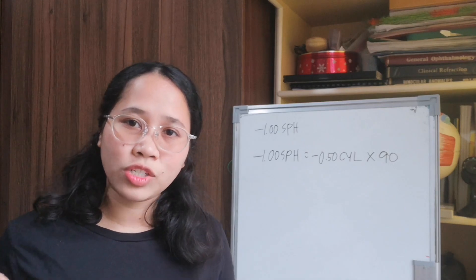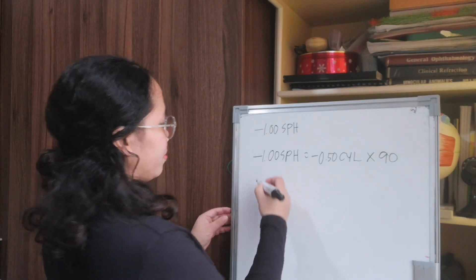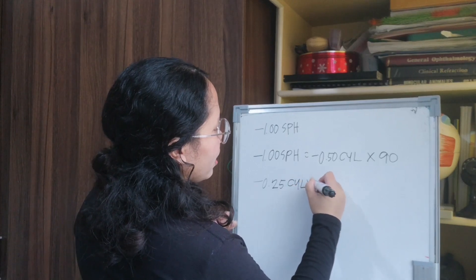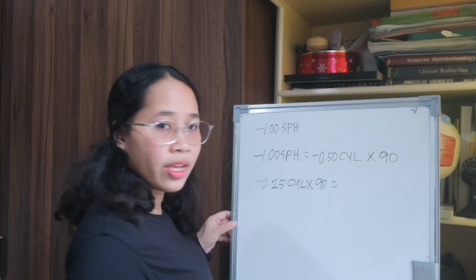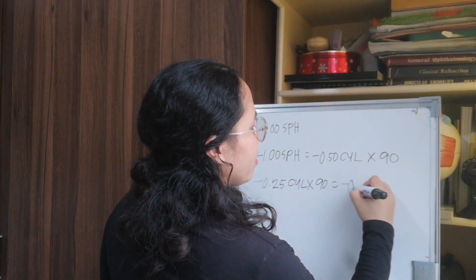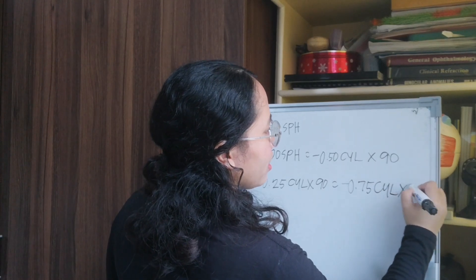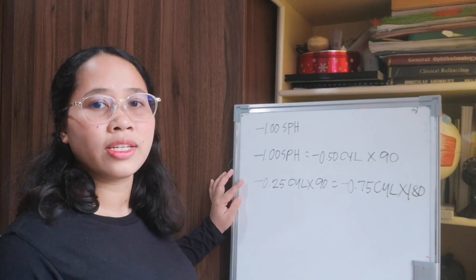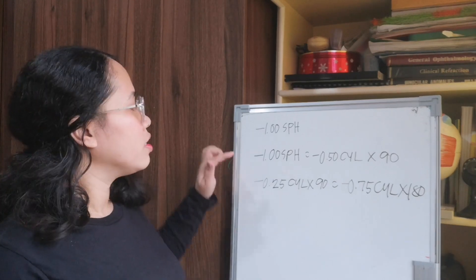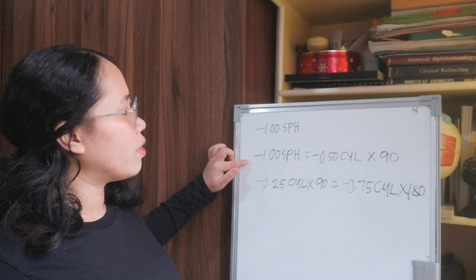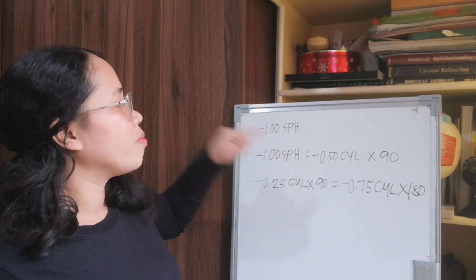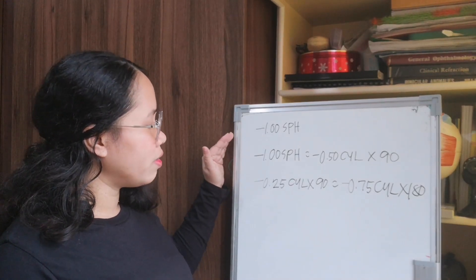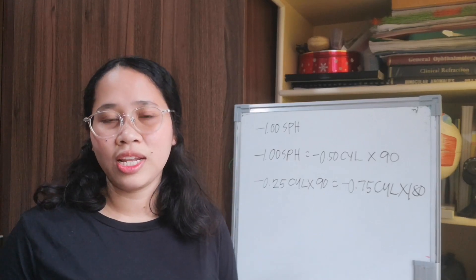A cross cylinder is a combination of two cylinders. For example, minus 25 cylinder axis 90 combined with minus 75 cylinder axis 180 — that is a cross cylinder. So we have: a sphere, a spherocylinder which is one sphere combined with one cylinder, and a cross cylinder which is two cylinders combined.